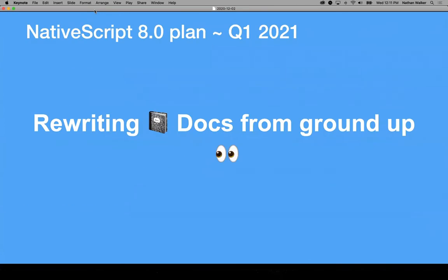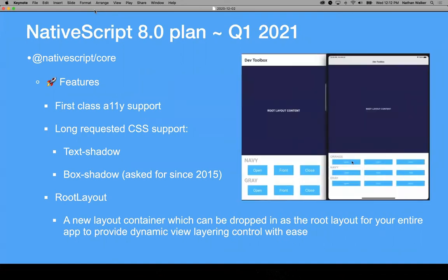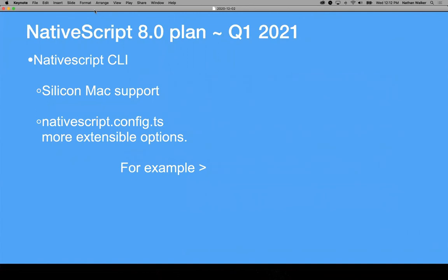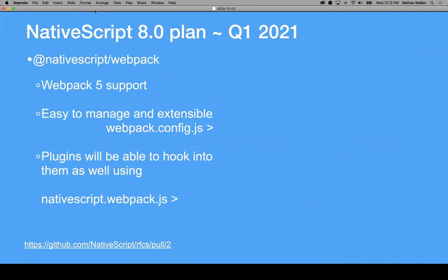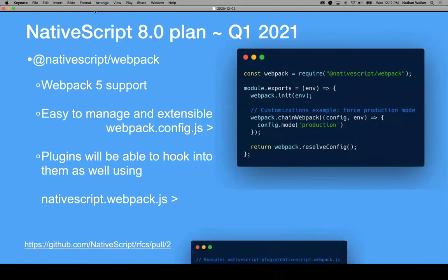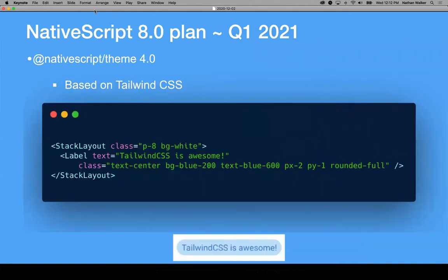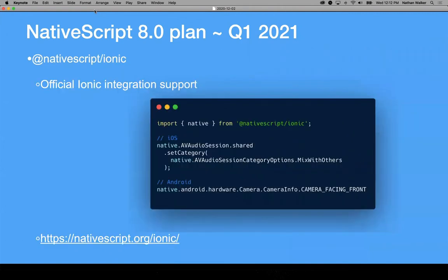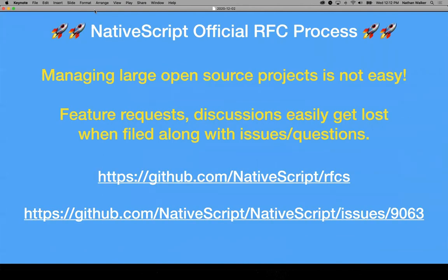That covers the 8.0 plan. To recap: NativeScript core features include first-class accessibility, long-requested CSS support covering text shadow and box shadow, and a brand-new Root Layout container with a built-in API for dynamic view creation and layering control. The CLI adds Silicon Mac support and NativeScript config extensibility options. Webpack 5 support greatly simplifies Webpack configs and enables plugins to engage in custom Webpack hooks. Theme 4.0 is based on Tailwind CSS. There is official Ionic integration with Capacitor support, and a full docs revamping that will coincide with potential website updates.